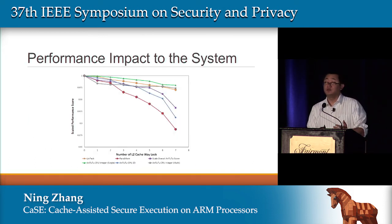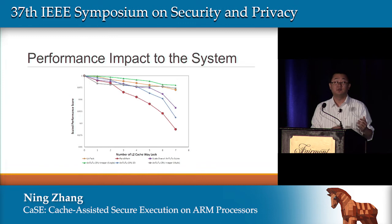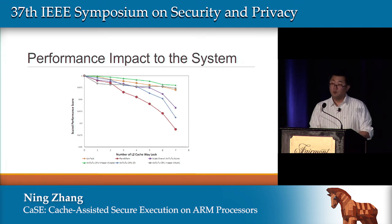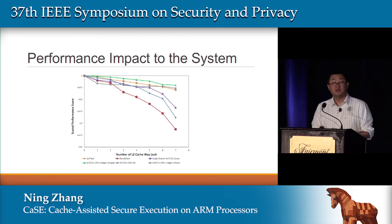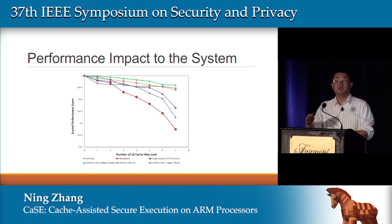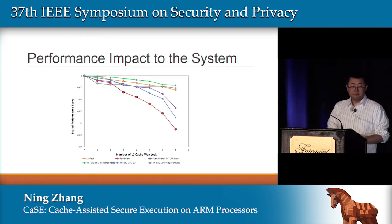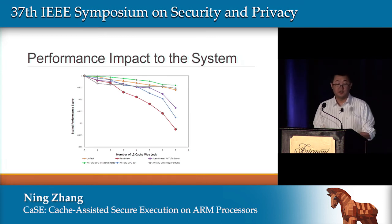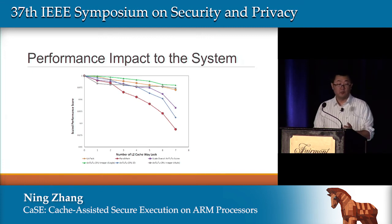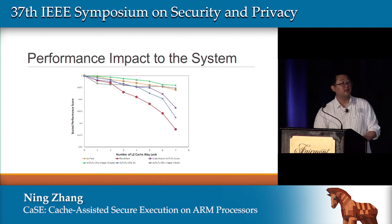What is the performance impact on the system itself? When we use only one L2 cache way, the system overhead is very small — about 3% in the worst case of random memory reads across the entire memory region. When we use all seven cache ways, the overhead is slightly worse, reaching 20–30%. But for the security we get, I believe it's a reasonable price to pay.